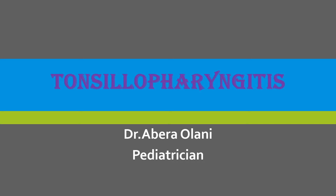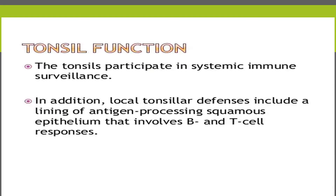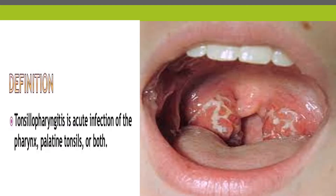Today's lesson is about tonsillopharyngitis in children. To start from the normal function of the tonsils: tonsils participate in systemic immune surveillance, and in addition, local tonsillar defenses include a lining of antigen-processing squamous epithelium that involves B and T cell responses. Tonsillopharyngitis is an acute infection of the pharynx, palatine tonsils, or both.